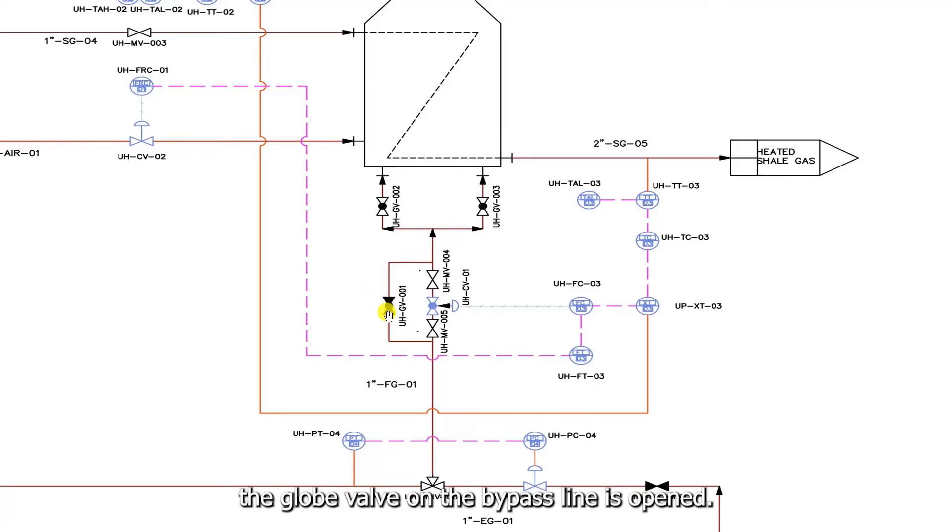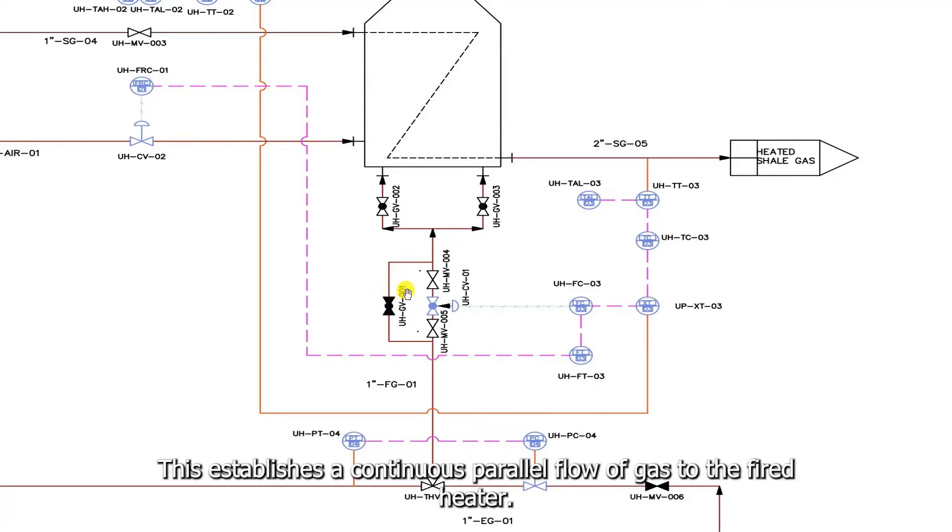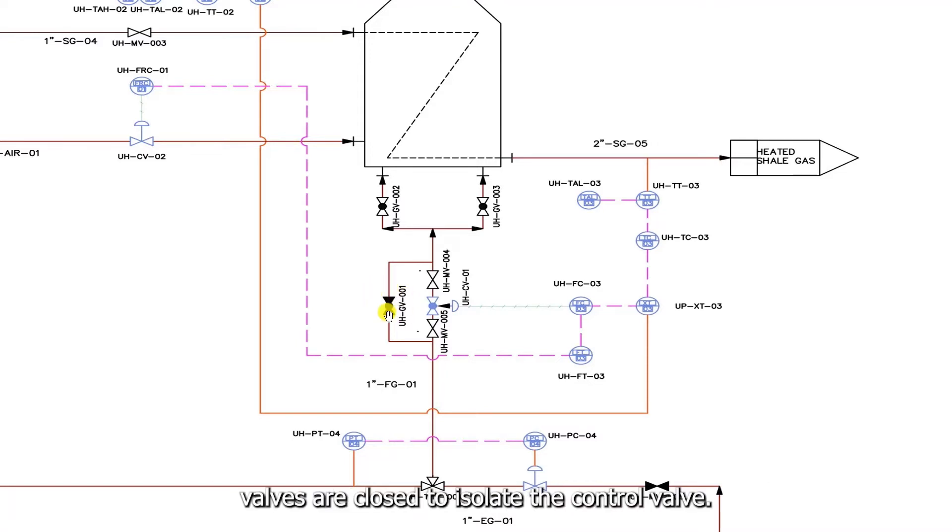First, the globe valve on the bypass line is opened. This establishes a continuous parallel flow of gas to the fired heater. Next, the two manual gate valves are closed to isolate the control valve. This action interrupts the flow of gas through the main line. This has no effect on the process continuity, as the bypass line is open, and gas is flowing through it.